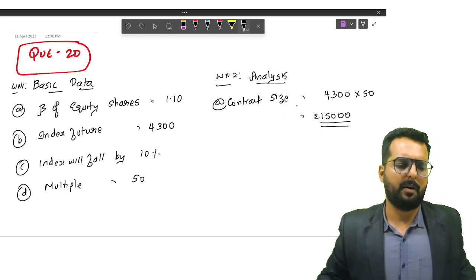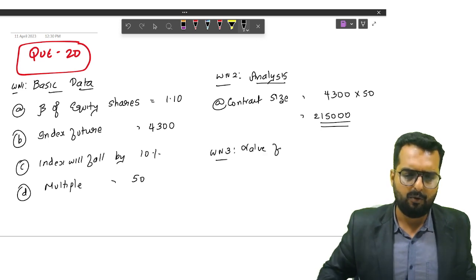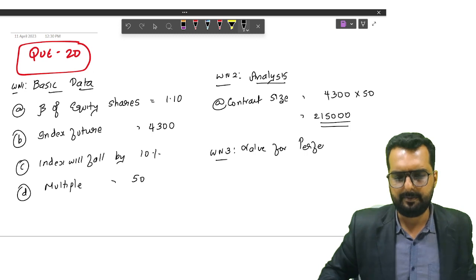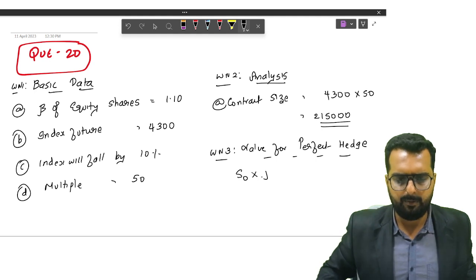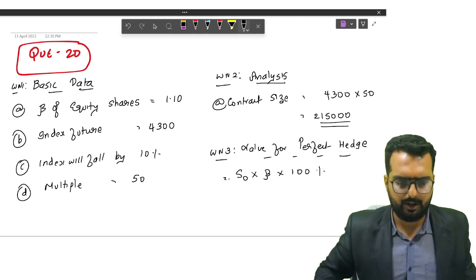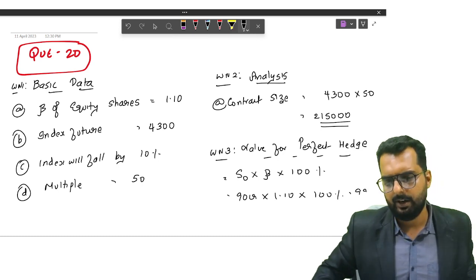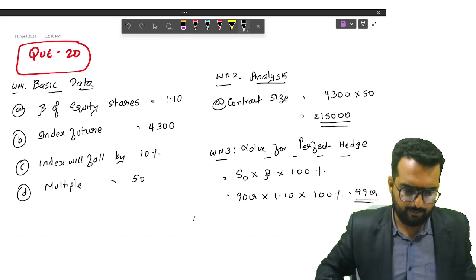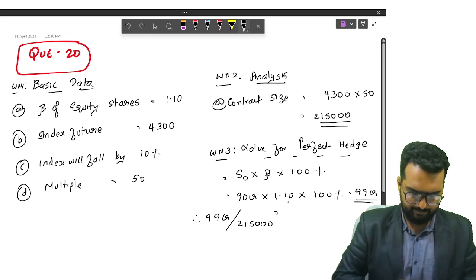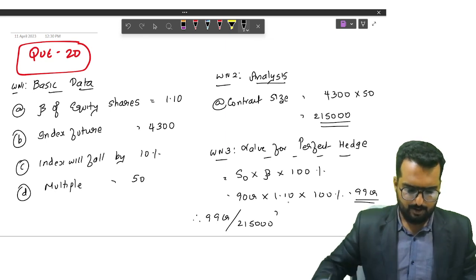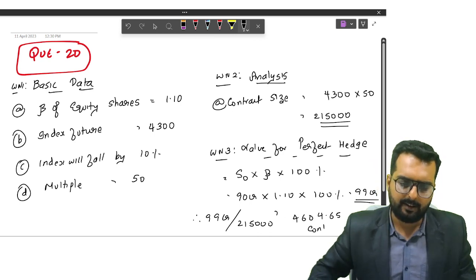Second thing, we know the value in the spot market. I think we can do a perfect hedging here. Value for perfect hedge: the formula will be S0 into beta into how much percentage? 100%. So, 90 crore into 1.1 into 100%. Do you get the answer as 99 crore?